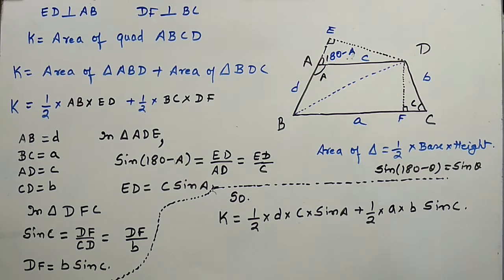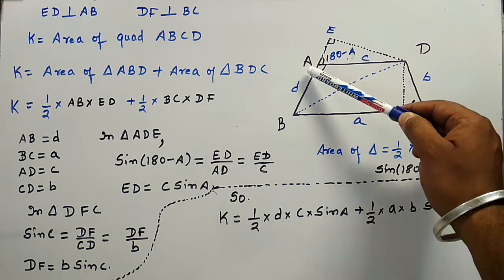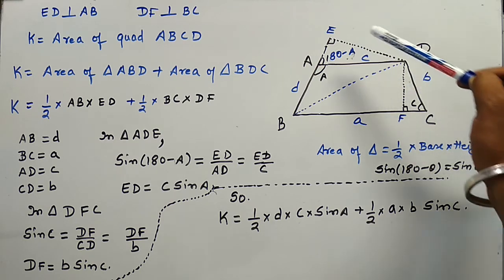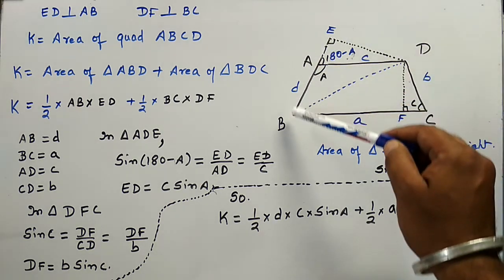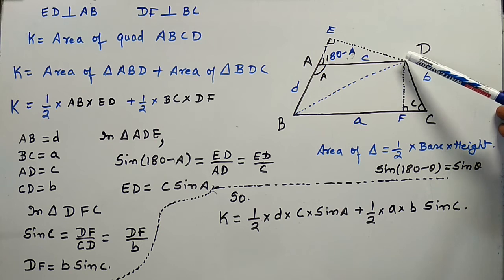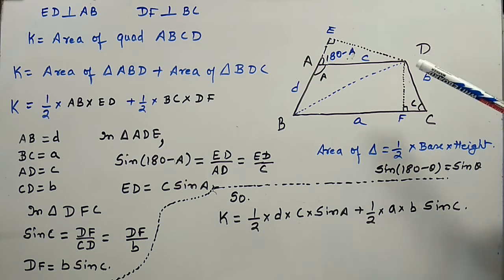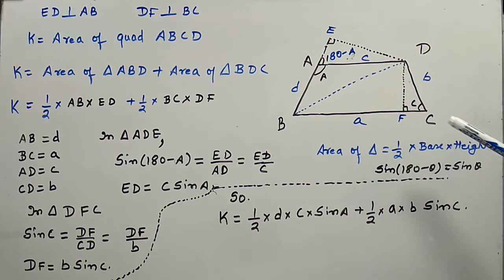For proving this theorem, I have made two constructions in quadrilateral A, B, C, D. I have extended AB till E such that I can drop a perpendicular from vertex D to the line AB, from which we can calculate the height of triangle ABD. I have also dropped a perpendicular from vertex D to line BC, by which we can calculate the height of triangle BDC.